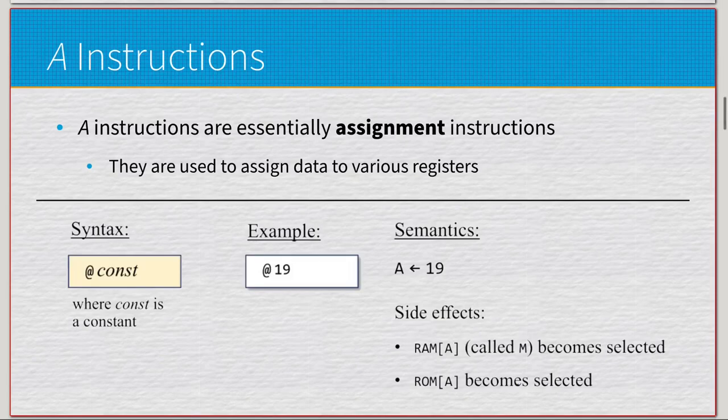Just like in some of the previous videos, we're going to start with the A instructions just because they are simplistic. They're very easy. All it's doing is loading some value into the A register. Now, side effects are that RAM and ROM will be adjusted because they're tied to the address register. But at the end of the day, we're really just adjusting the A register. Whether that be through an actual constant value, a variable, or a label, it's some number being loaded into the A register.